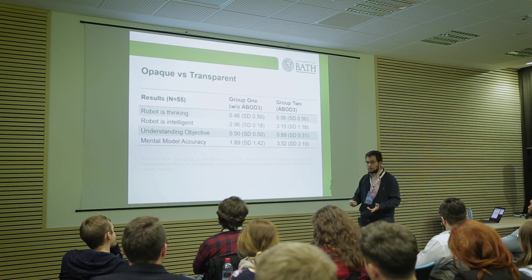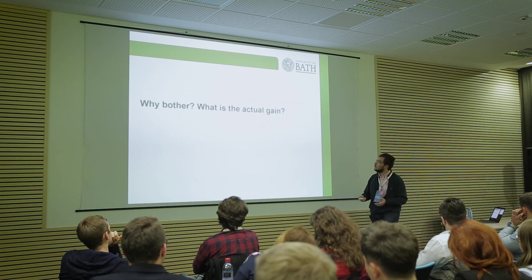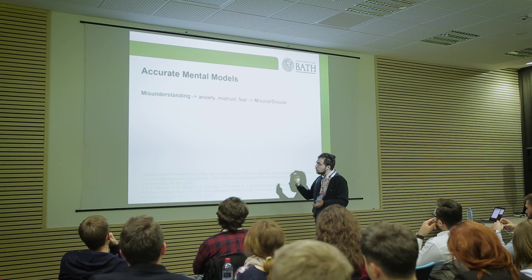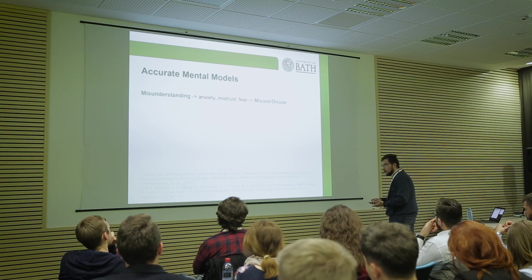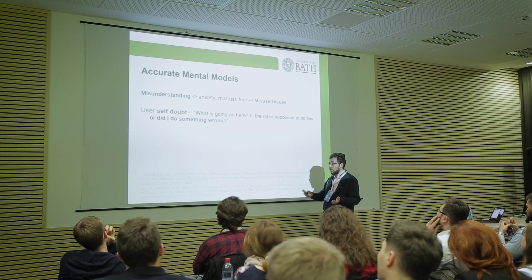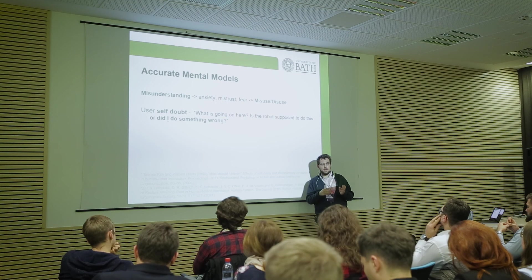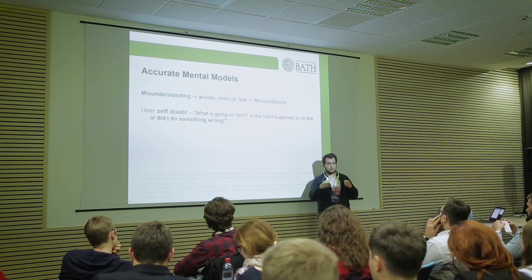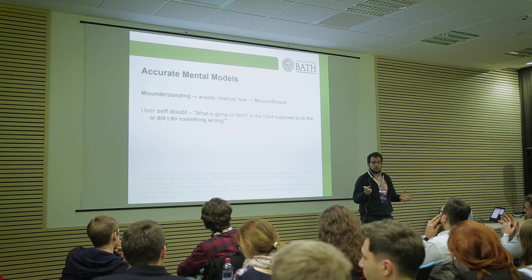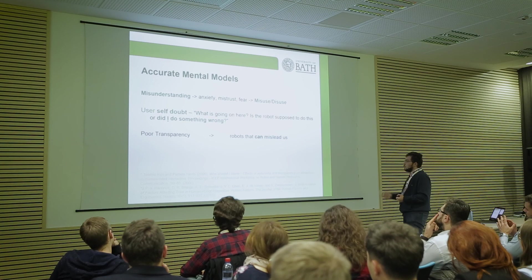This is useful because it allows people to have a better understanding of when the robot is behaving the way it is. Otherwise, as the literature shows, any misunderstanding can lead to anxiety, mistrust, or fear — and even to misuse and disuse. As a famous study by Kim and Heinz showed, it also adds self-doubt: people working with a robot, when the robot did something unexpected, were always asking 'was it supposed to do that? Did I do something wrong?' — not a single one thought the robot was faulty. They were all placing the blame on themselves. And that's why robots can end up misleading us if there isn't enough transparency.